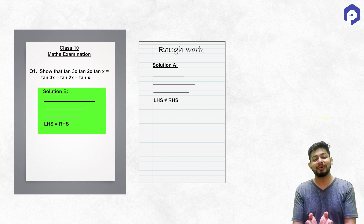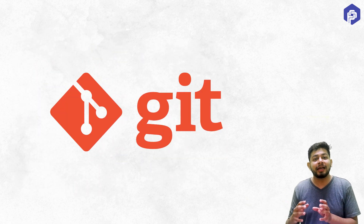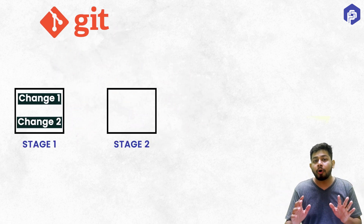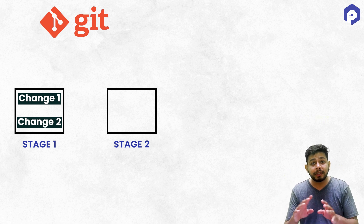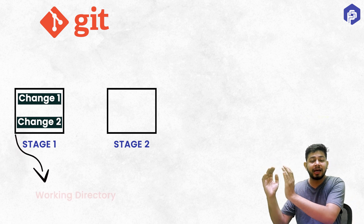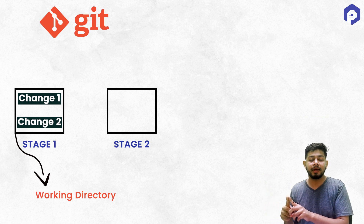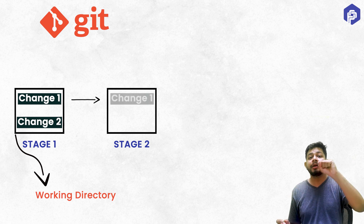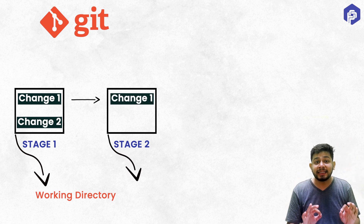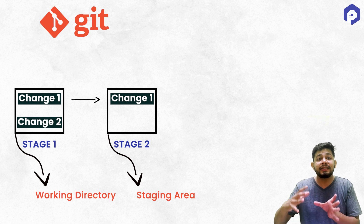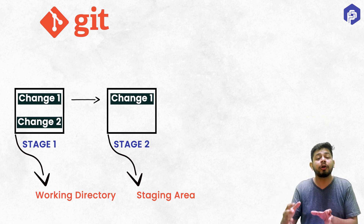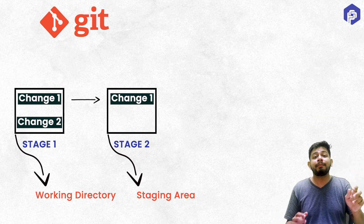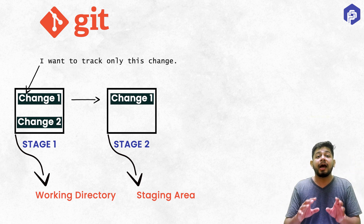Git works in a very similar manner — it keeps changes in different stages or areas. All the changes you have created in your local system are initially in the working directory, which is like the rough work area. The changes that are relevant and important for the project you bring to the main answer area, which is your staging area. Files that you want to save for your project, you bring them to the staging area to tell Git to track those changes.